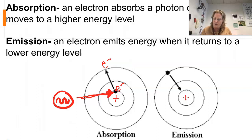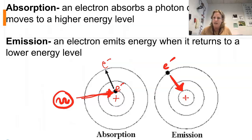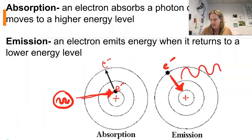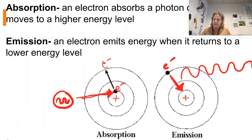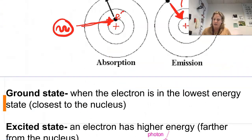Whenever possible, the electron is attracted to the nucleus, so it will return back and give back that photon. We can then sometimes see the photon giving off a certain color — a certain frequency of light. This is what's happening with the emission spectrum.